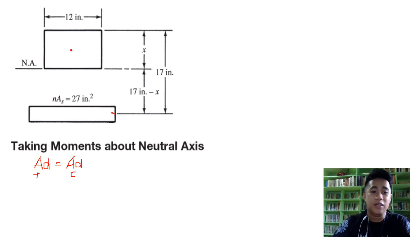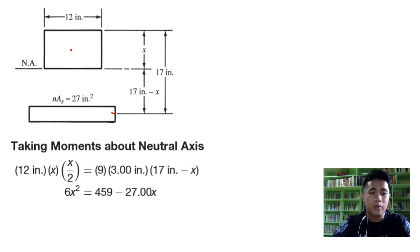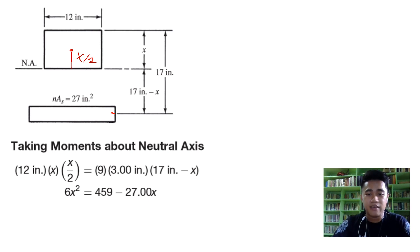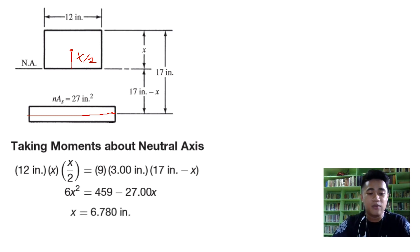The tension area is the steel area given as nAs, and the compression area is the rectangular concrete section. So we have 12 times x times x/2 for the compression, equal to 27 times (17 minus x) for the tension. Simplifying that equation gives 6x² = 459 − 27x, from which we get x = 6.780 inches. That is our neutral axis depth.